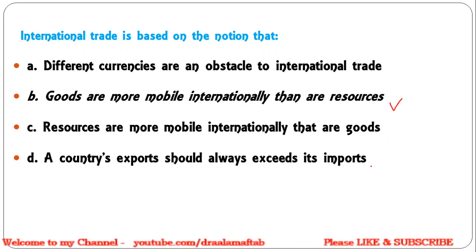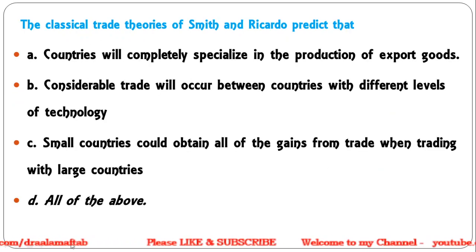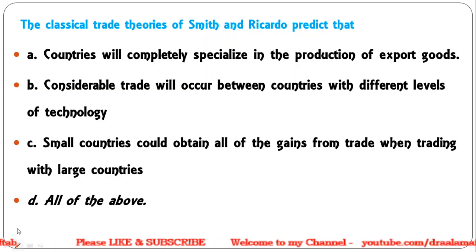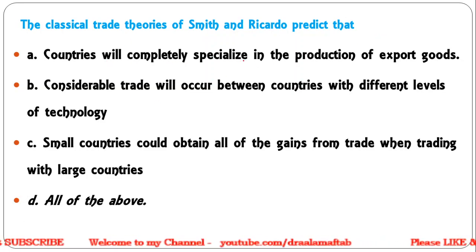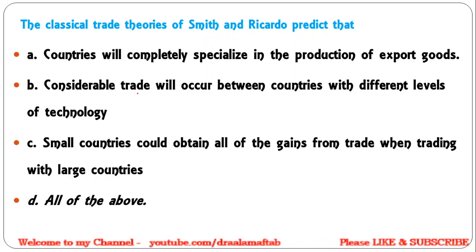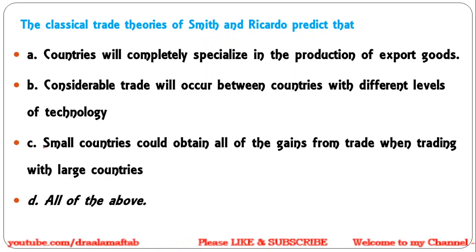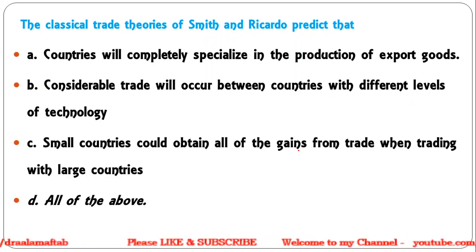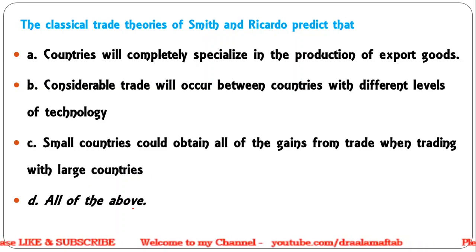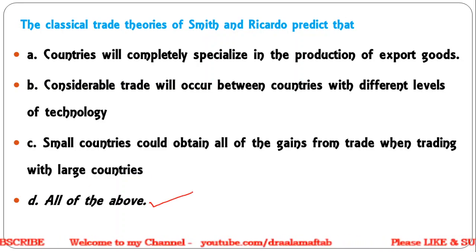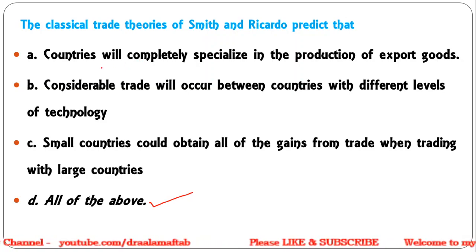Next: Classical trade theories of Smith and Ricardo predict that — countries will completely specialize in the production of export goods; considerable trade will occur between countries with different levels of technology; small countries could obtain all of the gains from trade when trading with large countries; all of the above. Correct answer: all of the above — all these predictions given by Adam Smith and Ricardo are correct.